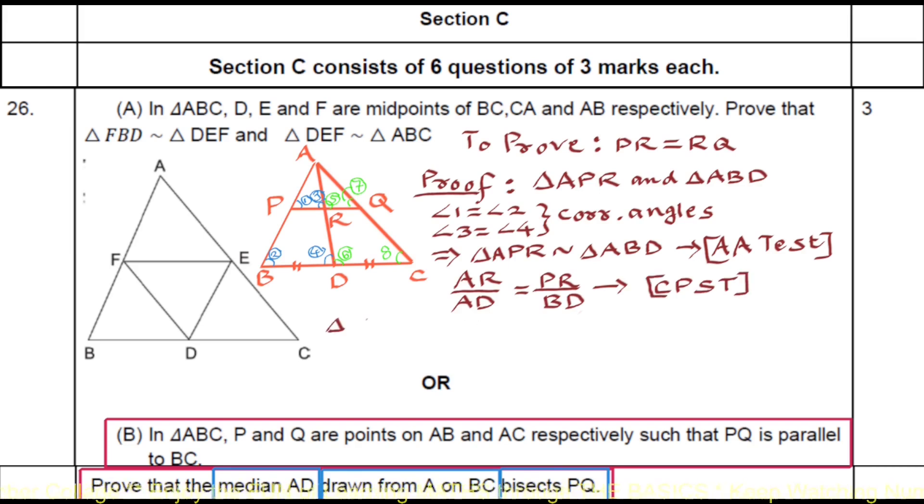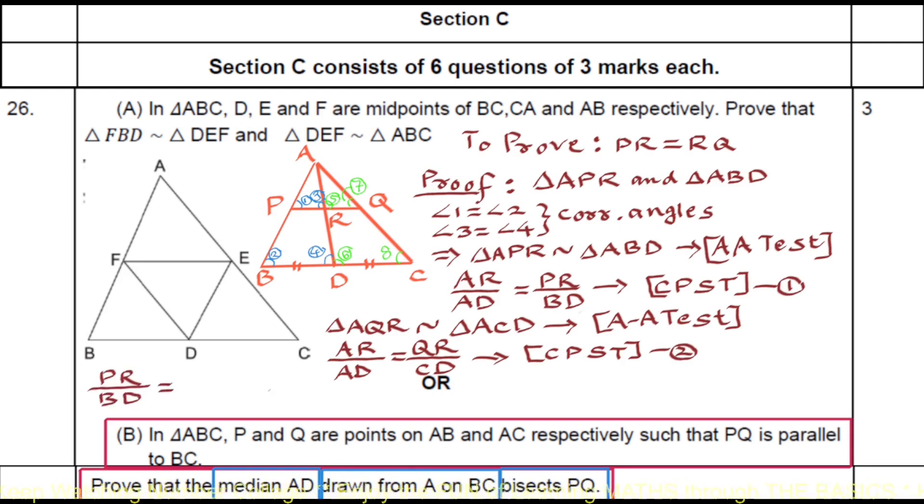Similarly, we can prove that triangle AQR similar triangle ACD, again by AA test, and hence AR upon AD equals QR upon CD, CPST as for similarity. From this 1 and this 2, we can write PR upon BD equals QR upon CD. Since AD is median, BD equals CD, that implies PR equals QR, which is what we have to prove here. PR equals QR.